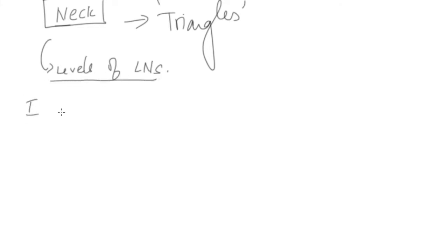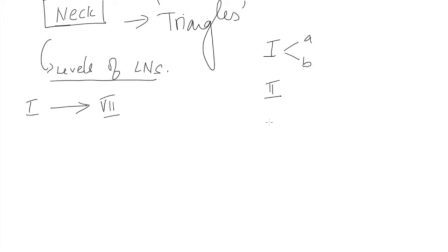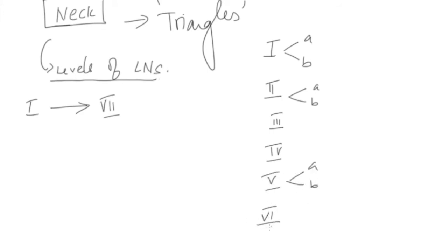We have levels 1 to 7 lymph nodes. Level 1 is divided into A and B. Level 2 is divided into 2A and 2B. Level 3, level 4 is divided into A and B, level 6, and level 7. In the next slide we will see the anatomical regions which define each particular area and how many lymph nodes they actually contain.